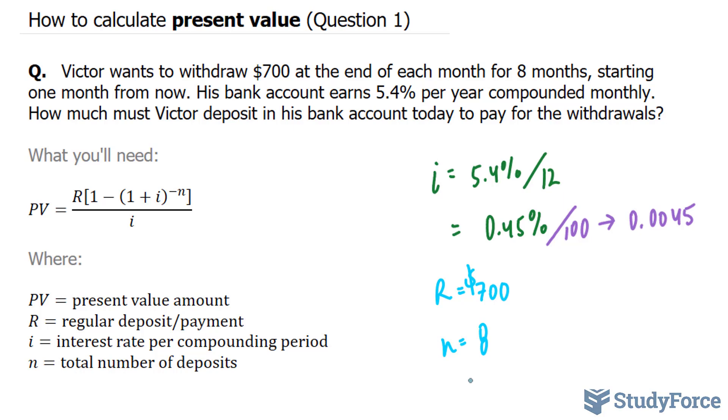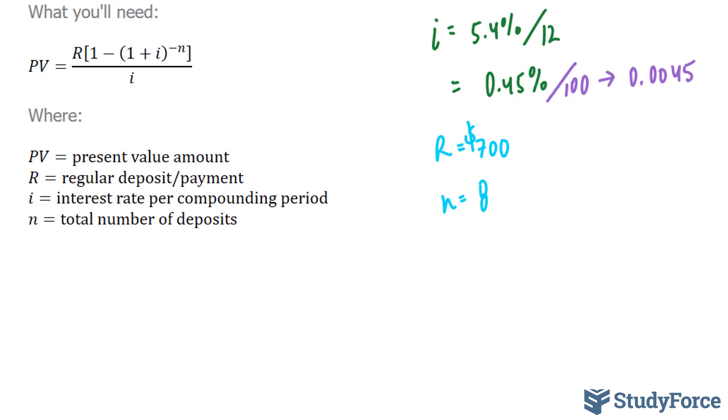So now we have everything we need to plug into this formula to find our present value. Let's do that. We have PV is equal to R, which is 700, times 1 minus bracket 1 plus 0.0045 to the power of negative 8, close bracket. Now of course, I'm using round brackets everywhere. If you feel more comfortable using square brackets, feel free to replace these with square brackets, although it does not make a difference. And our i value, once again, is 0.0045.